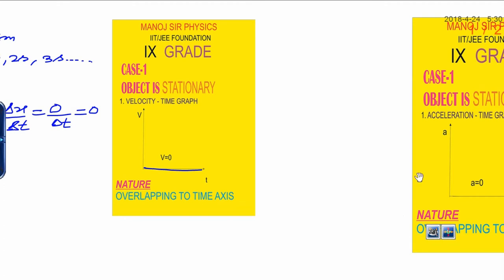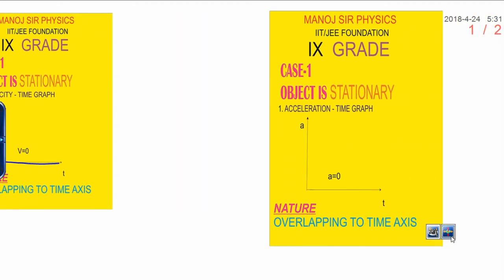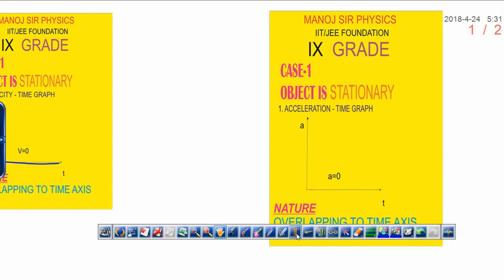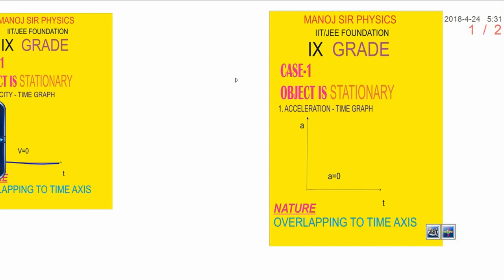Similarly, another graph is here. That is, when object is stationary, how do you draw the acceleration time graph? You know what is acceleration? Acceleration is change in velocity upon change in time.